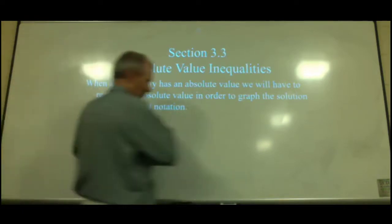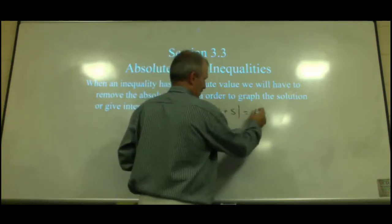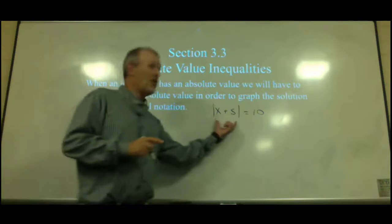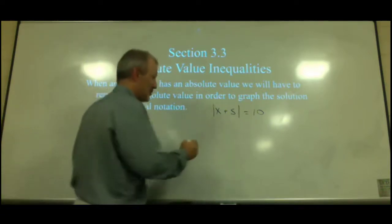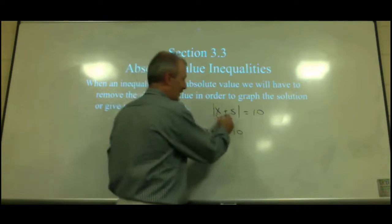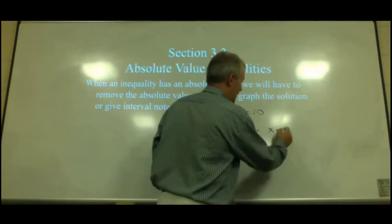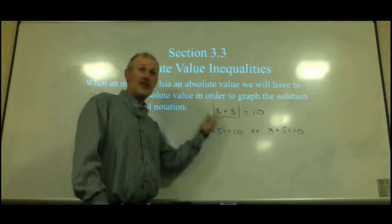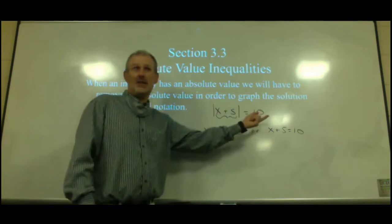Just a quick reminder: if we saw something like |x + 5| = 10, these two bars are a hint that we need to split it into two statements. The two statements were that x + 5 could equal negative 10, or x + 5 could equal positive 10. That's how we could make this true, because the absolute value of negative 10 is 10, and the absolute value of 10 is also 10.